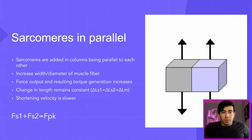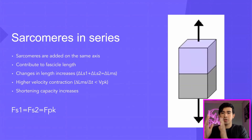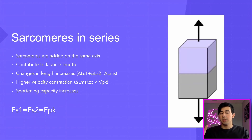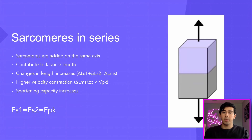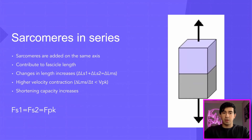When we talk about sarcomeres in series, sarcomeres are added on the same axis. Think of it like a train — the entire train is the muscle fiber, and the cars connected to it are the sarcomeres. If we keep adding cars to the train, we're making the train longer. Therefore, sarcomeres in series create changes in length — they contribute to classical length and make the distance from point A to point B longer in the muscle fiber.